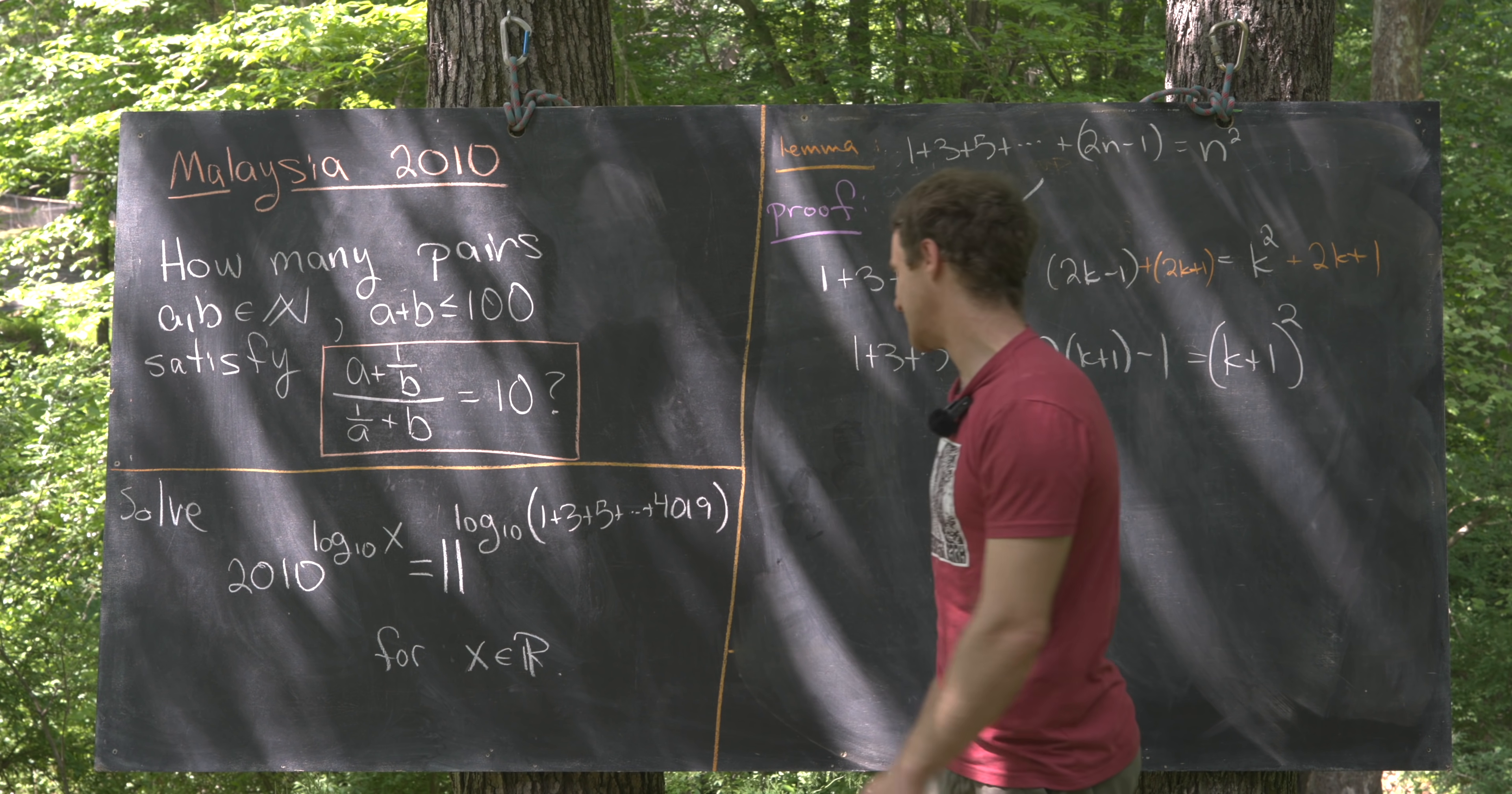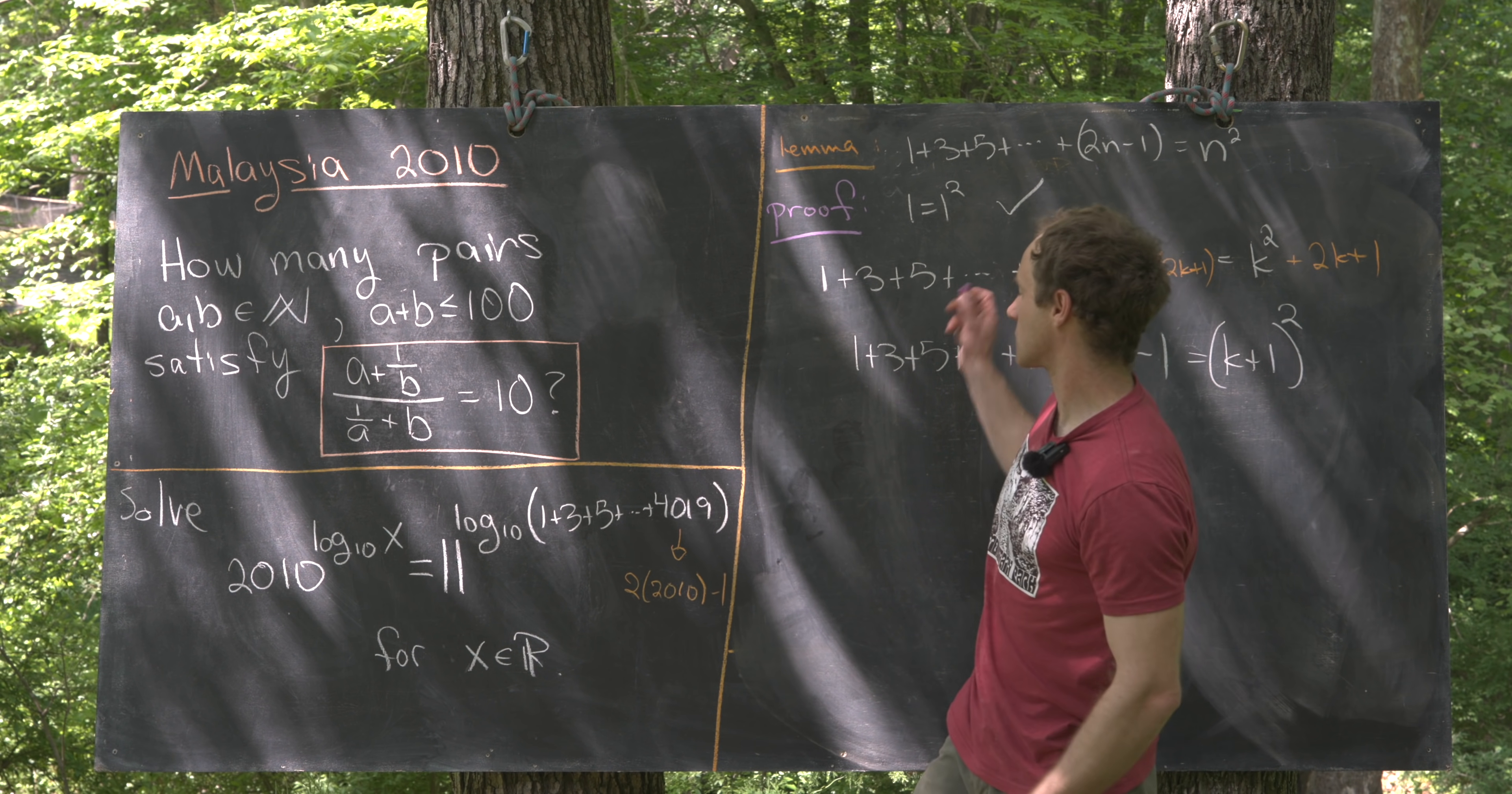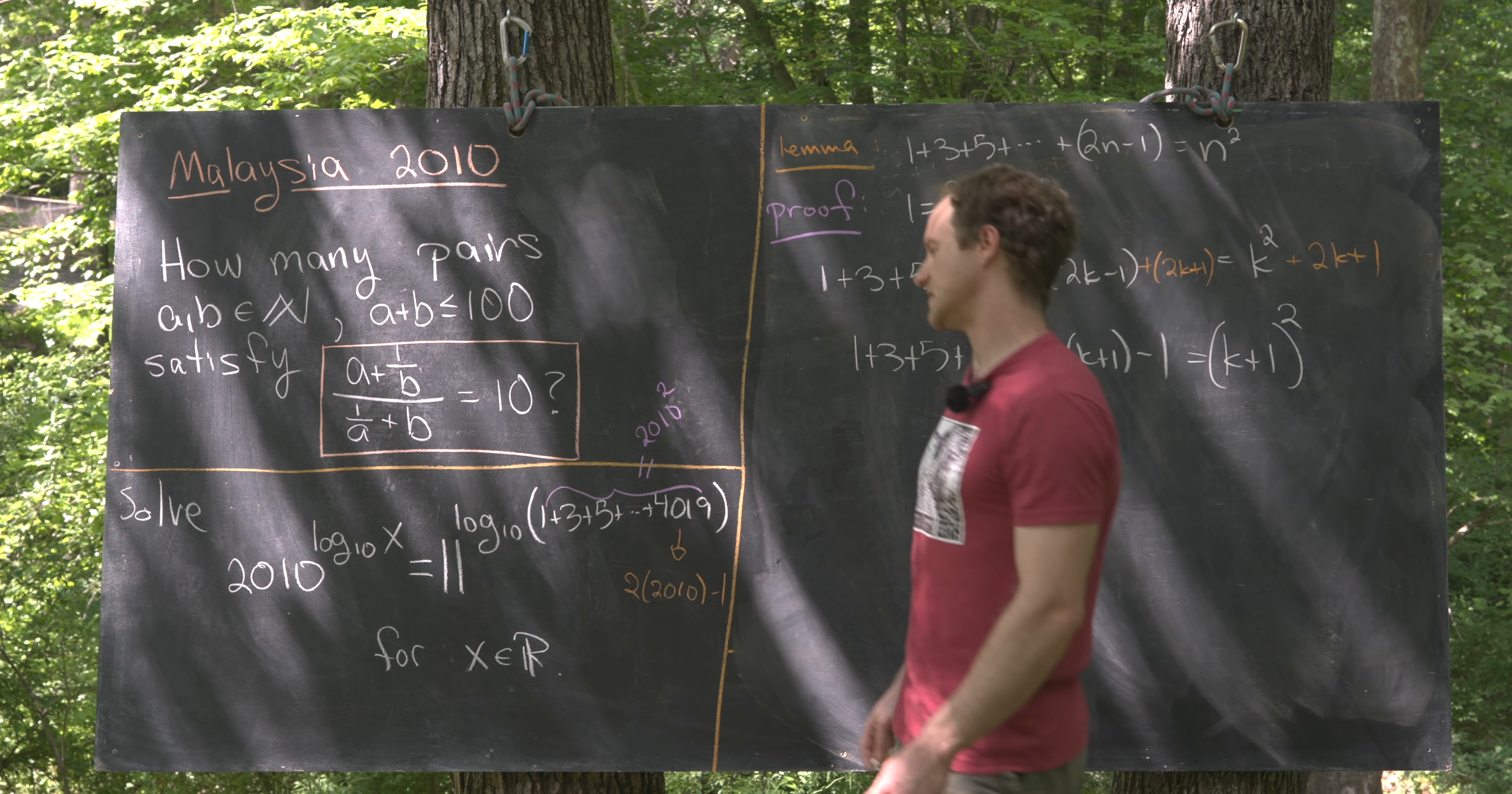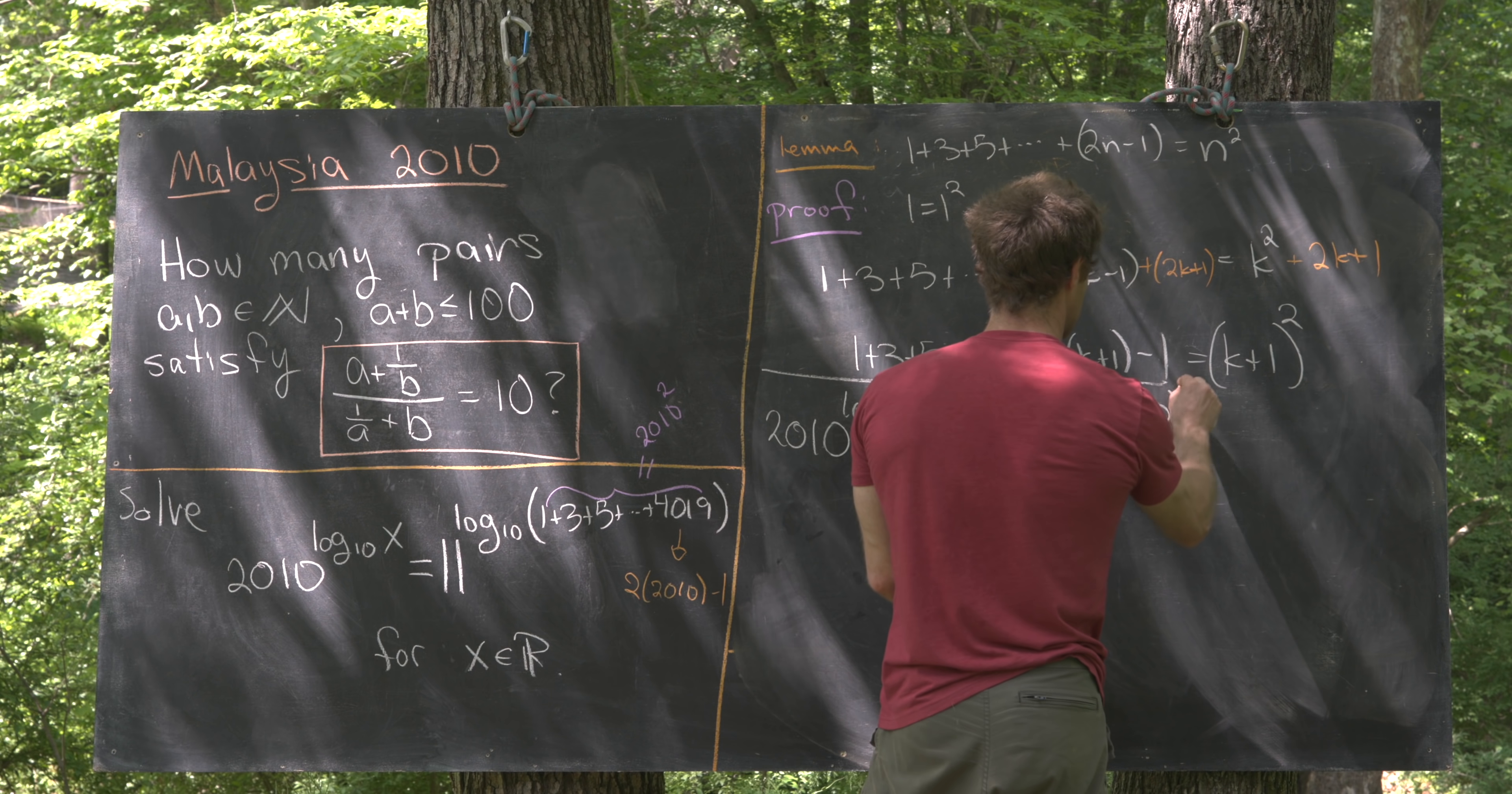But now, notice that this 4,019 is in fact the same thing as 2 times 2,010 minus 1. So what we have here is the sum of the first 2,010 odd integers. By our lemma, we know that that means that this sums up to 2,010 squared. So that's good news because that's going to be easier to work with. So let's rewrite this equation now. We have 2010 to the log base 10 of x is equal to 11 to the log base 10 of 2010 squared.